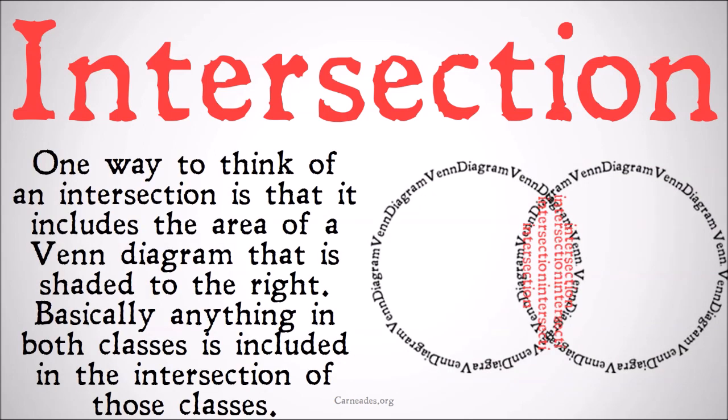One way to think of an intersection is that it includes the area of a Venn diagram that is shaded in the image to the right. Basically anything in both classes is included in the intersection of those classes.